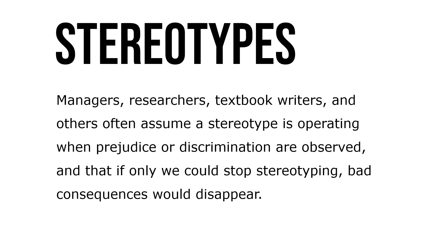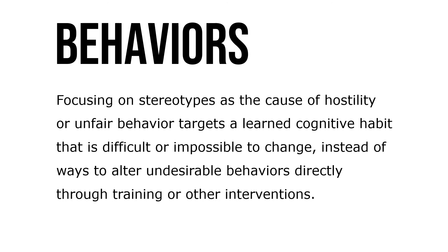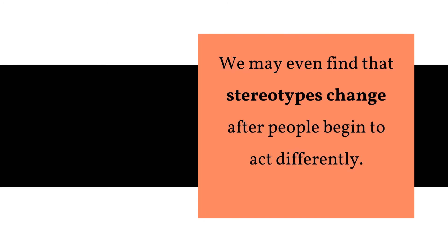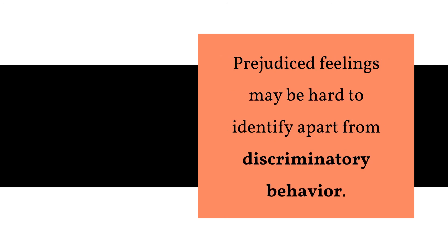Managers, researchers, textbook writers, and others often assume a stereotype is operating when prejudice or discrimination are observed, and that if they were only to stop stereotyping, bad consequences would disappear. Focusing on stereotypes as the cause of hostility or unfair behavior targets a learned cognitive habit that is difficult or impossible to change, instead of altering undesirable behaviors directly through training or other intervention. Problematic behavior is probably easier to change than stereotypes — we may even find that stereotypes change after people begin to act differently.